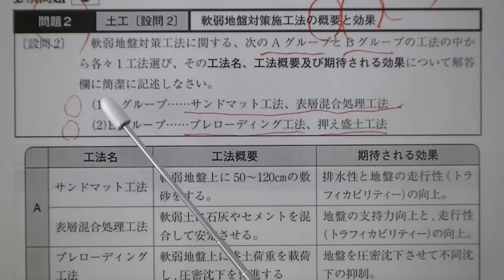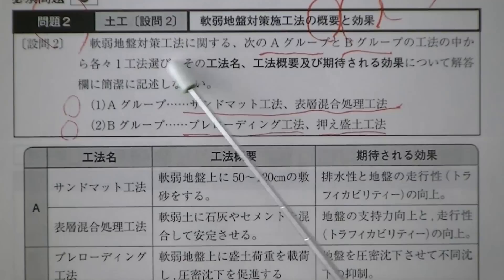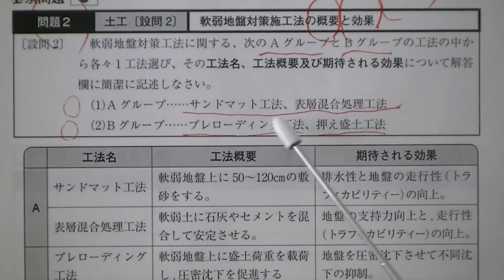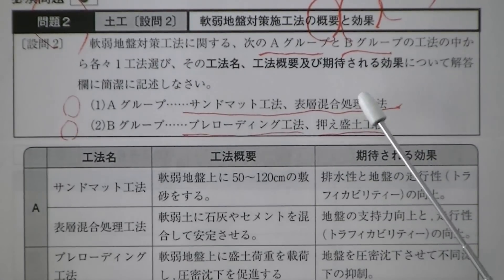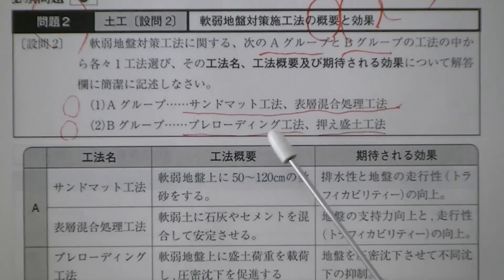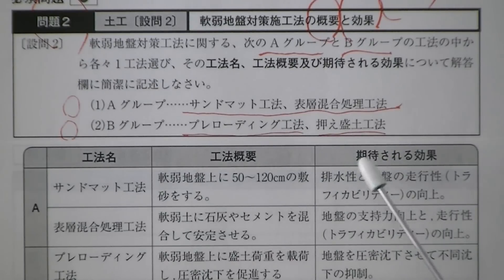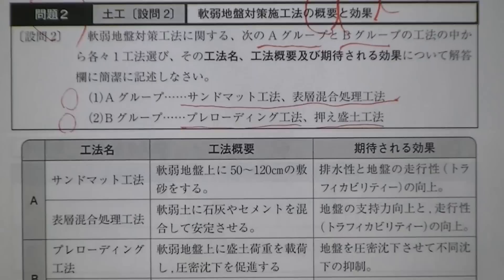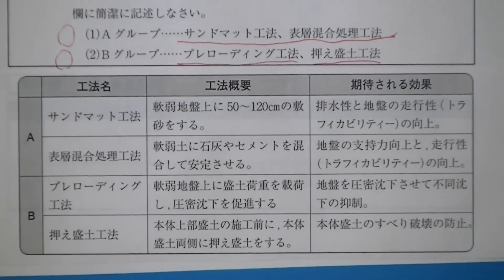説問の2では、軟弱地盤対策の概要と、その対策による効果を書いてもらいます。表層関係ではサンドマットや表層混合処理工法のいずれかを、Bのところではプレローディング工法あるいは抑えモリド工法を書く。全体4つ問題ありますが、AとBで一つずつ書けばよいです。